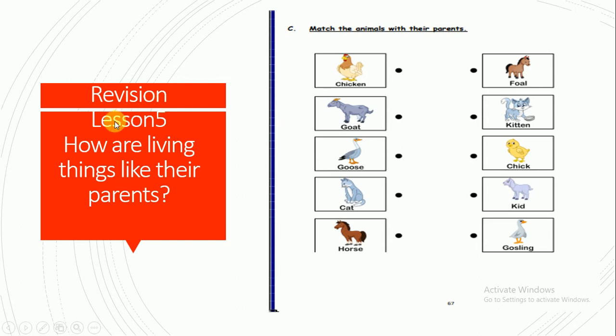Lesson 5 Revision. How are living things like the parents? We're gonna find it in the booklet, Page 66 and 67.